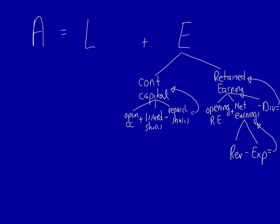Contributed capital is equal to opening contributed capital plus issued shares minus repurchased shares. Those three amounts added together equal the ending contributed capital amount that shows up on the statement of financial position.